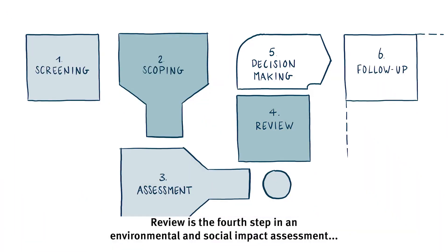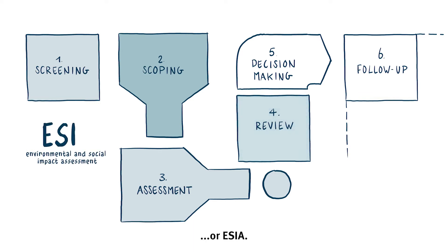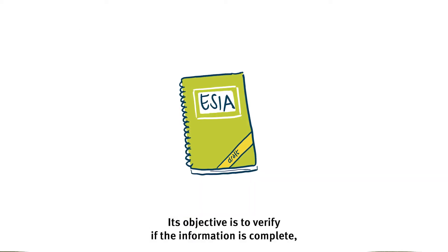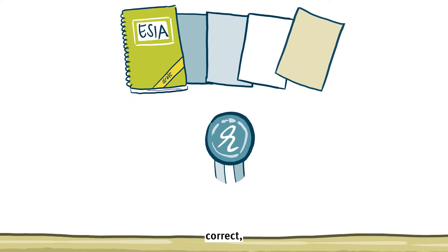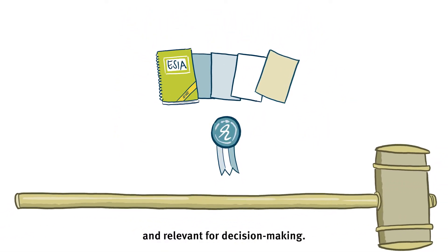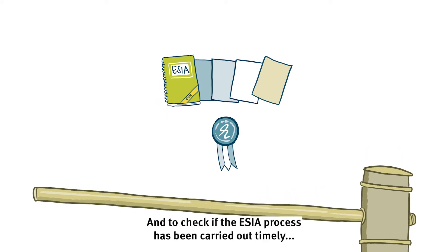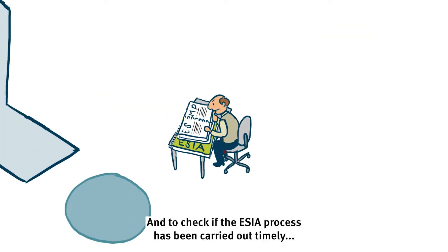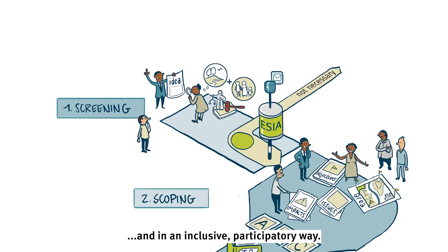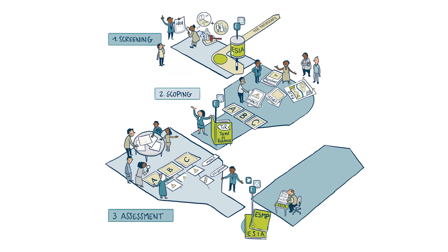Review is the fourth step in an Environmental and Social Impact Assessment, or ESIA. Its objective is to verify if the information is complete, correct and relevant for decision-making, and to check if the ESIA process has been carried out timely and in an inclusive, participatory way.